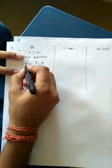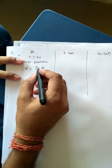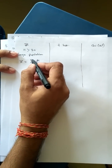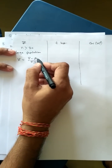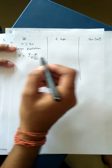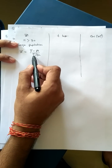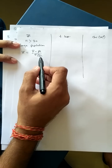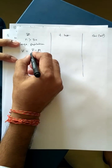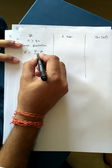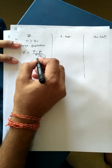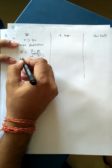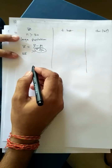Here, the test statistic Z equals x-bar, where x-bar is your sample mean, mu is the population mean, sigma is the standard deviation, and n is the sample size. This whole denominator term is also known as the standard error.